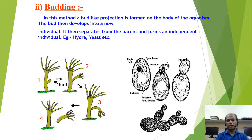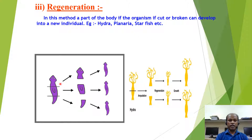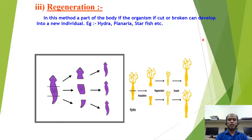Regeneration is a very important type of asexual reproduction. It takes place in Hydra, Planaria, and Starfish. In this method, the organism's body is cut into many parts and each part has the ability to regenerate — that is, if the organism is cut or broken, each piece can develop into a new individual.